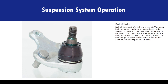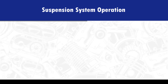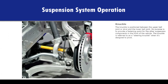Ball joints consist of a ball and a socket. The upper ball joint connects the upper control arm to the steering knuckle, and the lower ball joint connects the lower control arm to the steering knuckle. The ball joints rotate, allowing the steering knuckle to turn and pivot as the control arms move up and down or the steering wheel is turned. The knuckle is positioned between the upper ball joint or strut and the lower ball joint, providing a fastening point for the other suspension components in the front of the vehicle. The knuckle is referred to as a steering knuckle when it's designed to pivot.